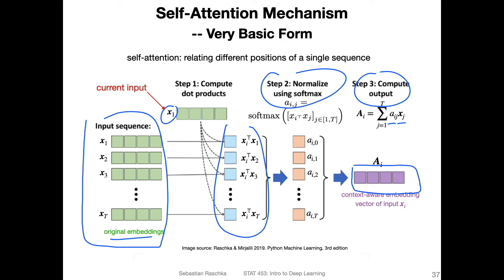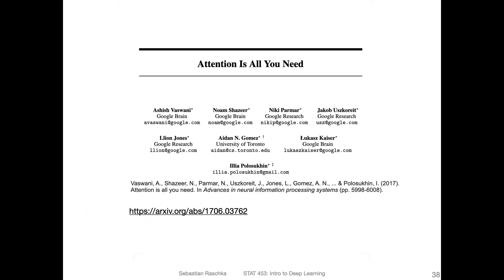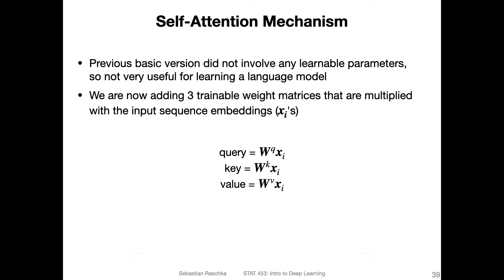For each input x_i we get a vector, and if we have T words we will get T vectors from one to T — essentially an attention matrix. We are now extending this concept of basic attention using the attention that is used in the 'Attention Is All You Need' paper.